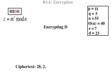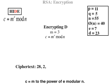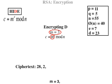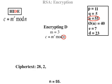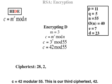Encrypting D: the numerical representation for D is 3. C equals M to the power of E modular N, where M equals 3, E equals 7, N equals 55. C equals 42 mod 55. This is our third ciphertext: 42.